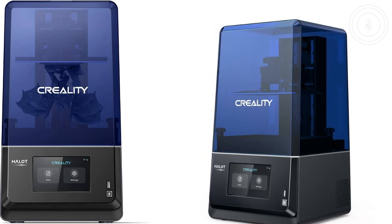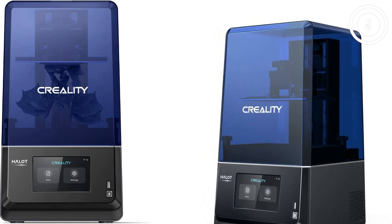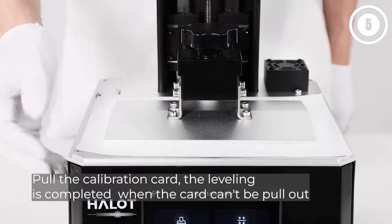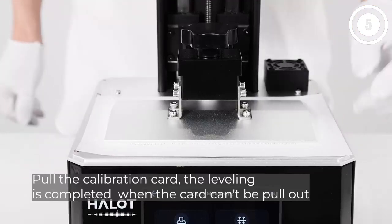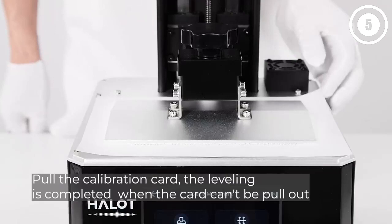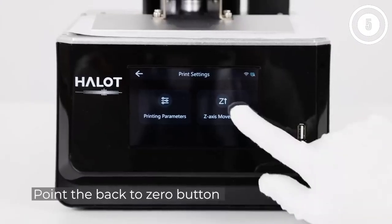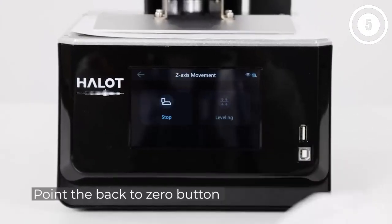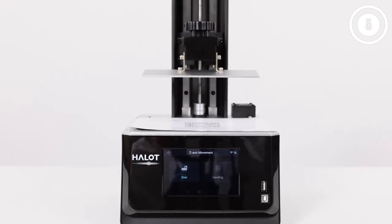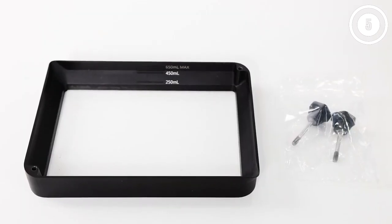Reasons to buy: 4K Plus resolution provides sharp detail and consistent surfaces. Large 5-inch LCD interface is bright, fast, and responsive. Built-in Wi-Fi connectivity and remote print monitoring. Halot BOX Slicer software is intuitive and easy to use. Integrated Air Filtration Unit.